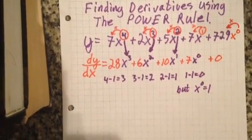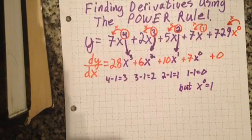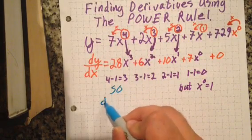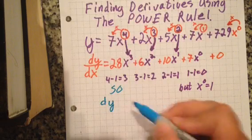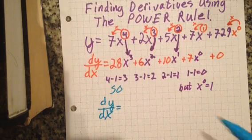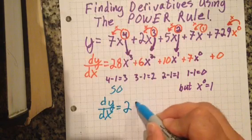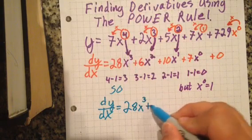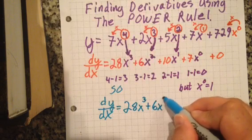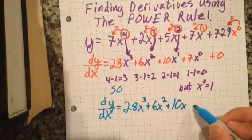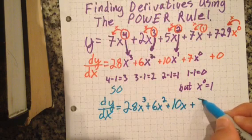I just found the derivative of that big long polynomial. Now I'm going to spruce it up a little. The derivative dy/dx equals 28x cubed plus 6x squared plus 10x plus 7. You don't need all that fancy stuff at the end.